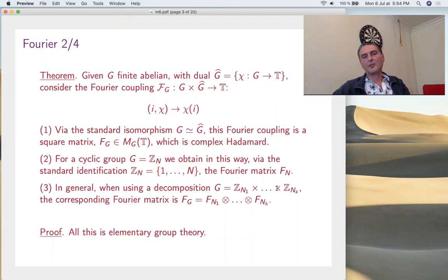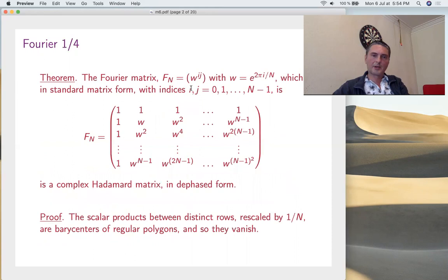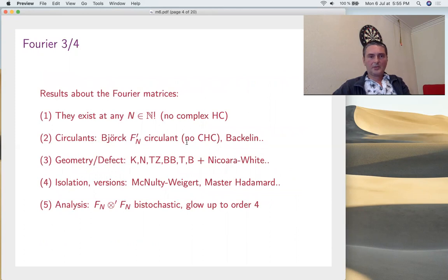In general, if you take a product of groups, the Fourier matrix decomposes as a tensor product. If we take a finite abelian group, we write it as a product of cyclic groups, we get a product of Fourier matrices. So finally, an arbitrary Fourier matrix is just a product of matrices like this, but with the omega ranging over other roots of unity.